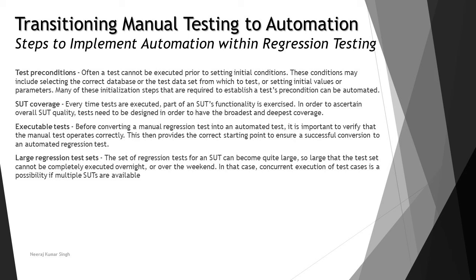Last but not least, we're talking about large regression test sets. A set of regression tests for an automated SUT can become quite large — so large that the test set cannot be completely executed overnight or over the weekend. In this case, concurrent execution of test cases is a possibility if multiple SUTs are available. You may have to consider creating replicas or copies of the SUT on different servers and running different suites simultaneously, rather than running the entire test suite on one instance.